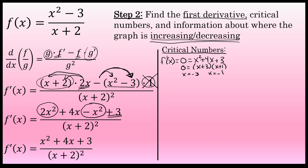There's an additional critical number where the first derivative doesn't exist — that's where the denominator equals zero. We already set the denominator equal to zero when finding the vertical asymptote, giving x equals negative 2. So this function has three critical numbers: x equals negative 3, x equals negative 2, and x equals negative 1. Those are the only places where the graph could change from increasing to decreasing.